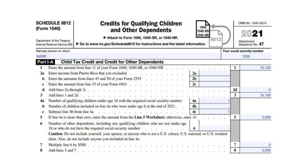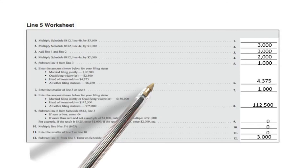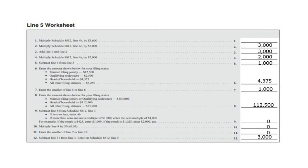Line 4B will be left blank as you don't have a child under the age of 6. Line 4C will be 1 as you subtract Line 4B from Line 4A. On Line 5, since Line 4A is more than 0, we need to enter the amount from the Line 5 worksheet. You can find this worksheet on page 4 of the 8812 instructions. Line 1 will be left blank as you don't have an amount on Line 4B. Line 2 will be $3,000 as you multiply Line 4C by $3,000. On Line 3, add Lines 1 and 2 together to arrive at $3,000.